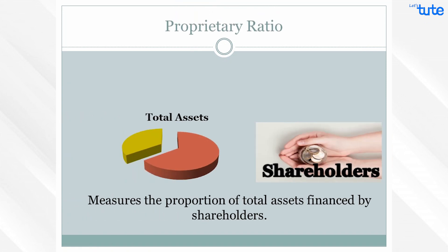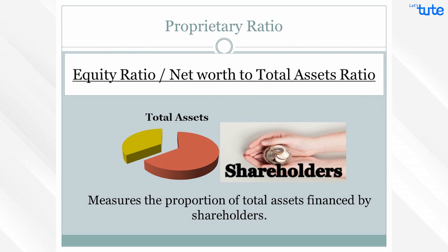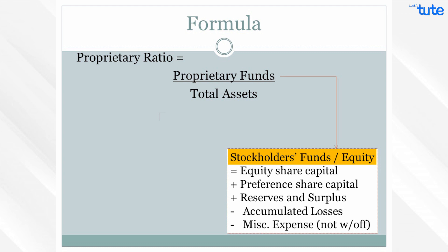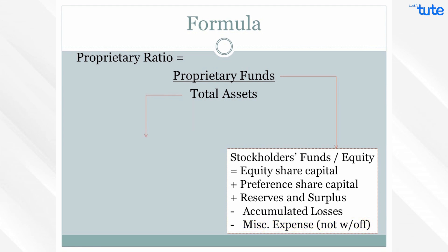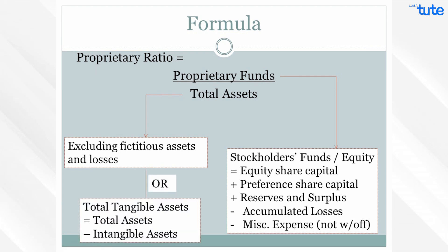Moving on to the last capital structure ratio — the proprietary ratio. This ratio measures the proportion of total assets financed by the shareholders, and is also known as equity ratio or net worth to total assets ratio. It is calculated by dividing proprietary funds by total assets. Proprietary funds include equity share capital, preference share capital, and reserves and surplus, minus accumulated losses or miscellaneous expenditure not written off. Total assets exclude fictitious assets and losses. Some analysts also consider total tangible assets — that is, total assets minus intangible assets.